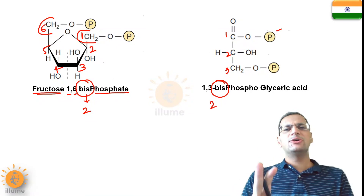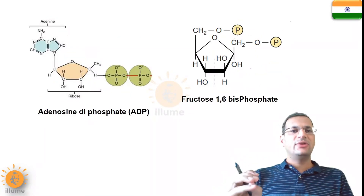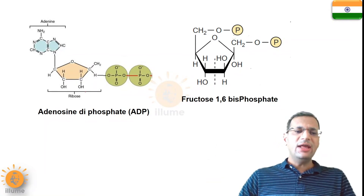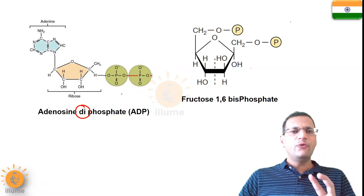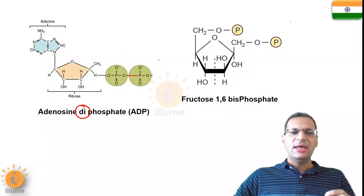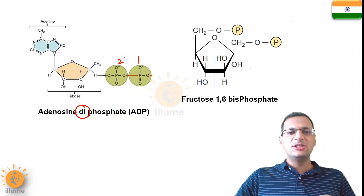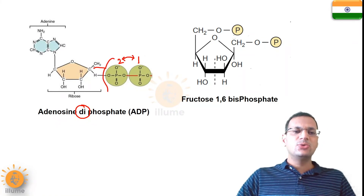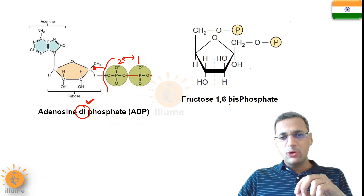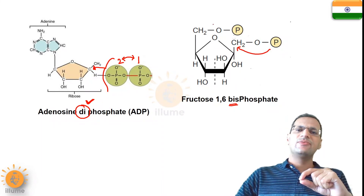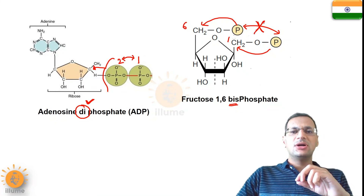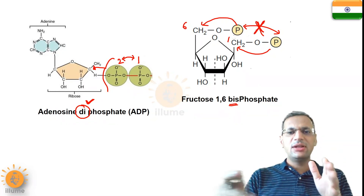In both di and bis, two phosphate groups are attached — but what is the difference? Why are we using two different terms? Listen carefully: whenever we use the word 'di,' the two phosphate groups are attached to each other, and then this unit as a whole is attached to the molecule. In ADP, the first and second phosphate are attached to each other, and then this entire unit is attached to the carbon. But in bisphosphate, one phosphate is attached to carbon number one and the other phosphate is attached to carbon number six, and these two phosphates are not attached to each other.